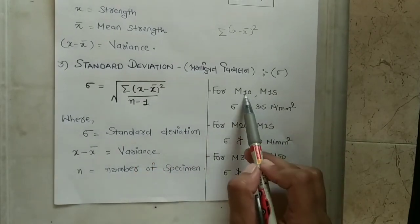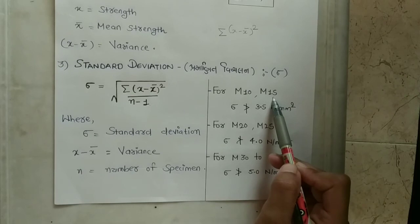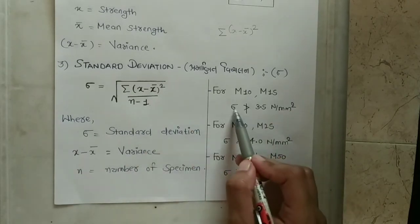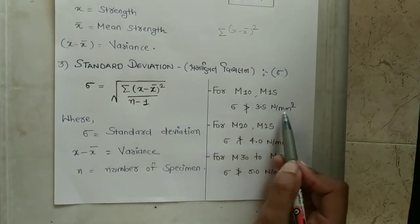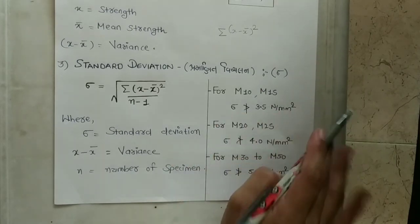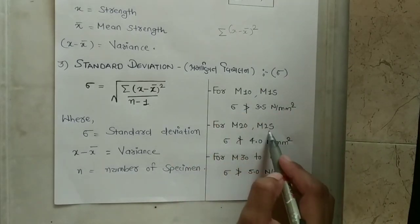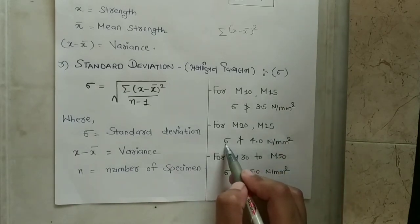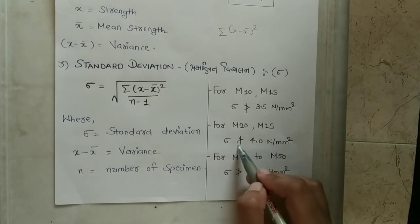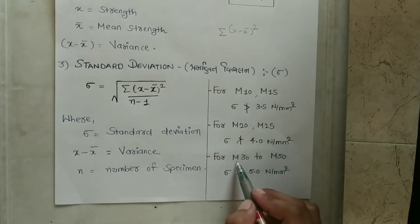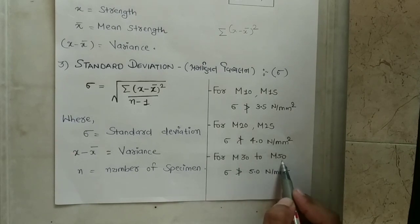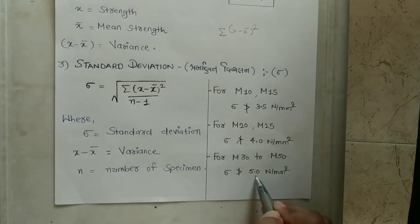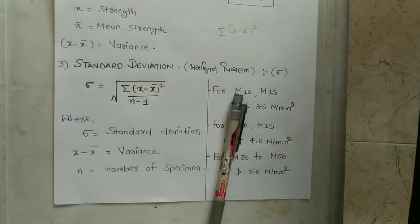For M10 and M15 grade concrete, the standard deviation value is 3.5 N/mm². For M25 grade concrete, the standard deviation value is 4 N/mm². If the standard deviation sigma value exceeds the permissible limit for the prepared concrete grade, it indicates a problem.